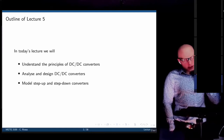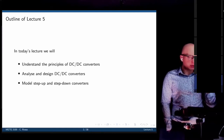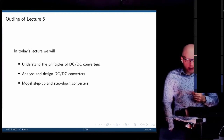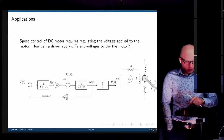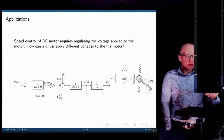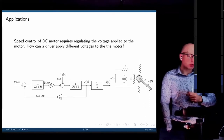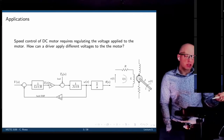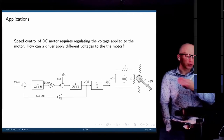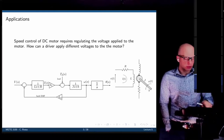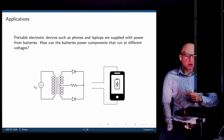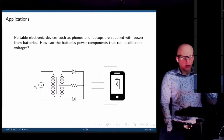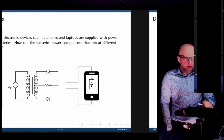Today we're going to understand the principles of DC converters. We're going to analyze two types — step-up and step-down — analyze and design DC to DC converters, and model them analytically. One application is motor control: if you have a motor and want to control the speed, we need to control the voltage. Another application is the cell phone, where different elements operate at different voltages.